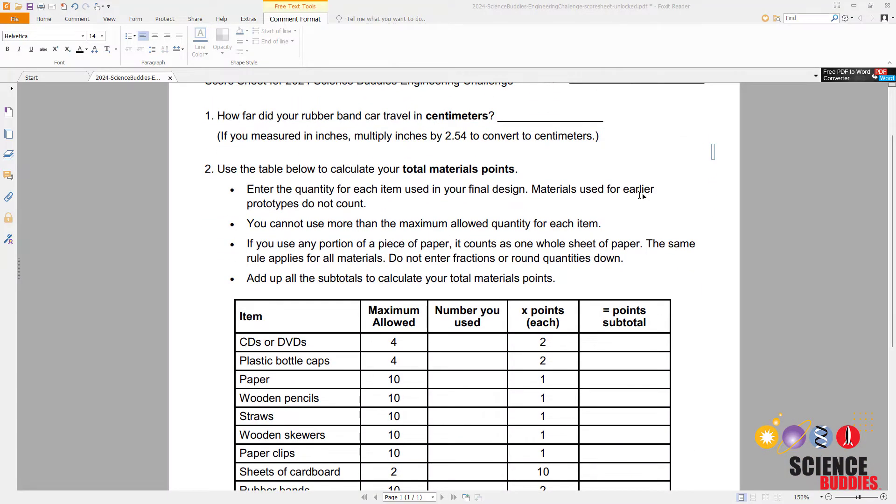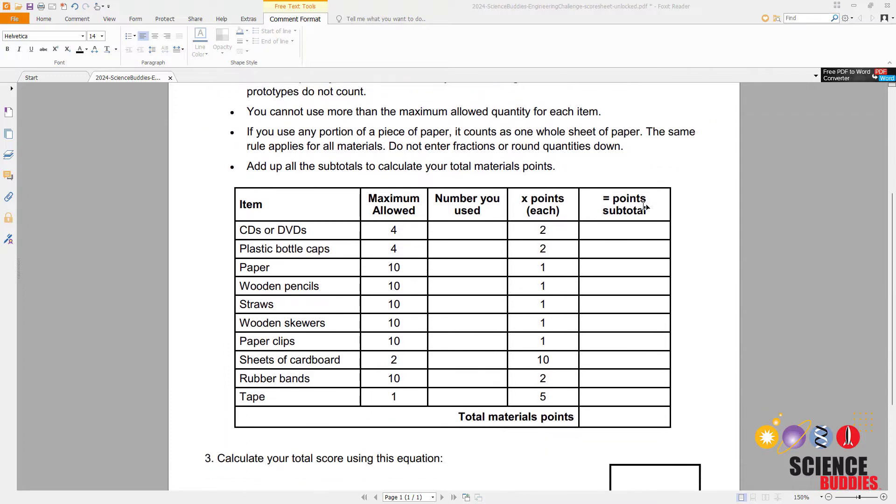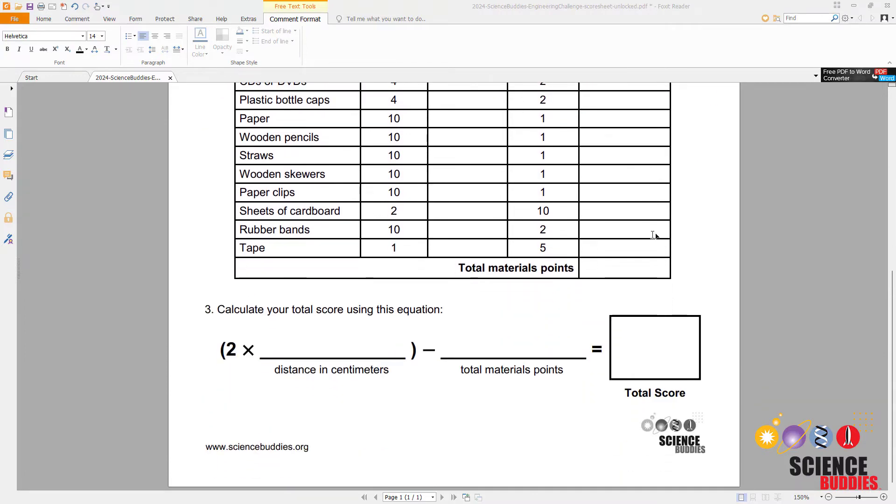Next we will switch over to the computer where we have a worksheet to help you calculate your final score. Your total score is calculated using the equation: two times the distance your car traveled in centimeters minus your total materials points.